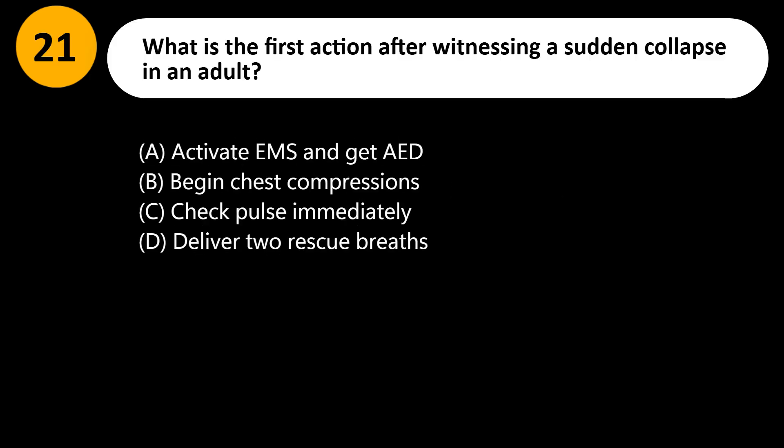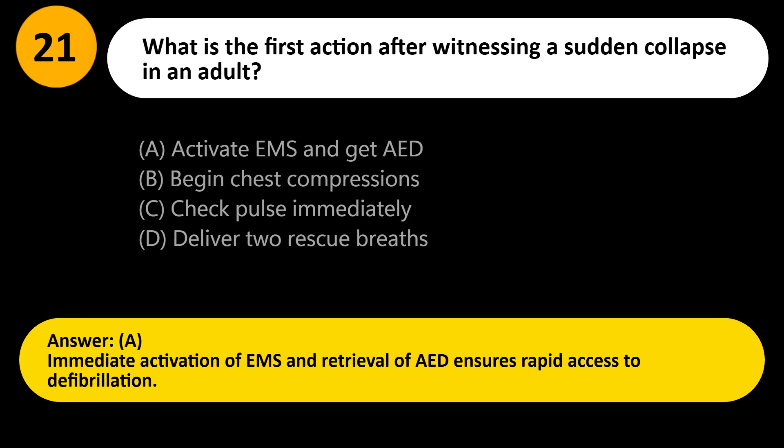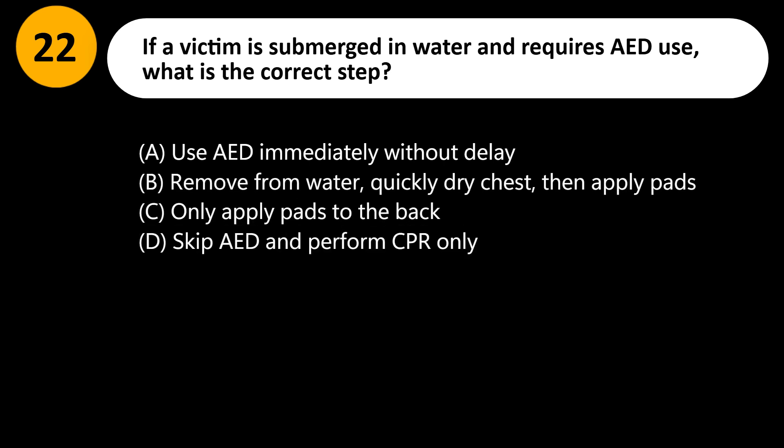What is the first action after witnessing a sudden collapse in an adult? A) Activate EMS and get AED, B) Begin chest compressions, C) Check pulse immediately, D) Deliver two rescue breaths. Answer: A. Immediate activation of EMS and retrieval of an AED ensures rapid access to defibrillation.